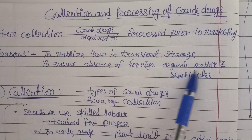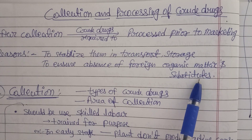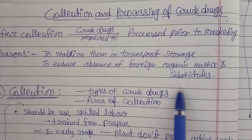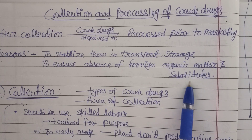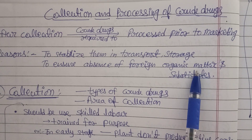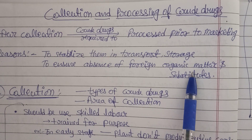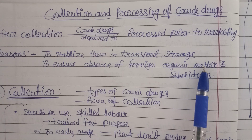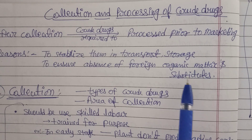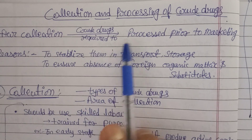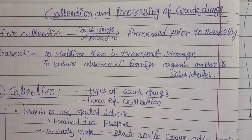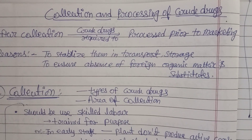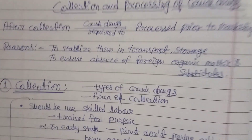Another reason for processing is to ensure the absence of foreign organic matter and substitutes. Anything mixed knowingly or unknowingly must be properly removed. Foreign organic matter collected along with the drug will contaminate it, degrade it, and reduce its medicinal and therapeutic value. That's why processing crude drugs is very important.